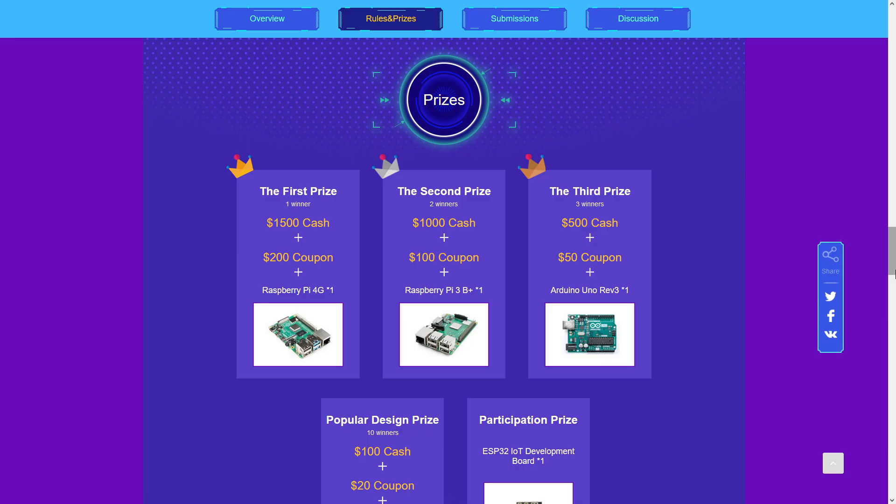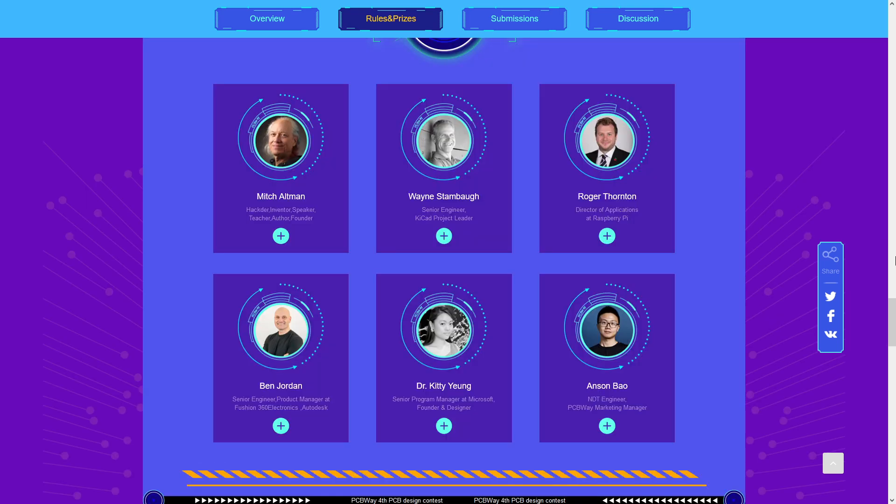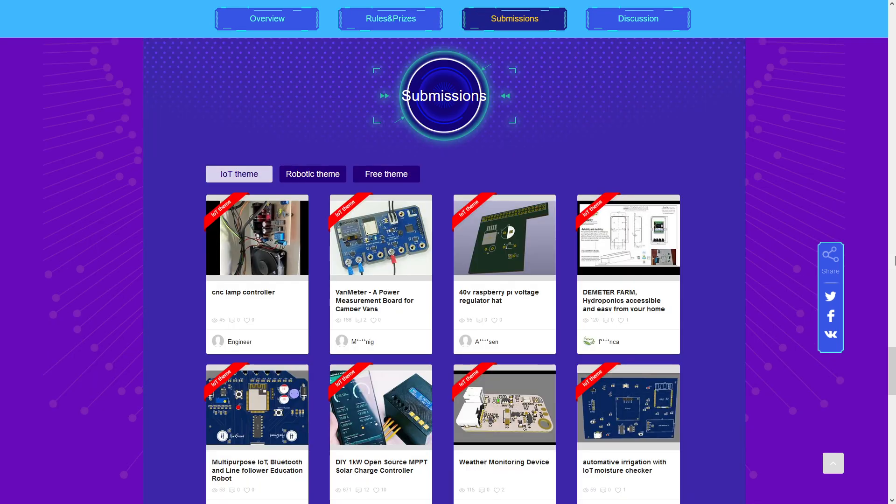First, second, and third place prizes consist of cash, coupons, and giveaways. There is also a popular design prize and a participation prize. Judges consist of well-known personalities from the makerspace. Get your submission in now for a chance to win.